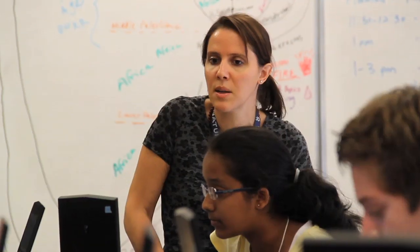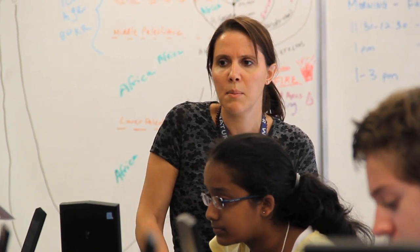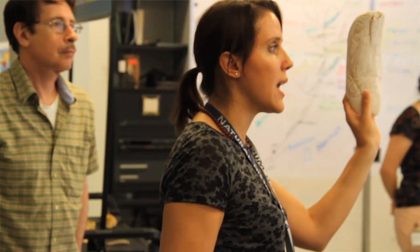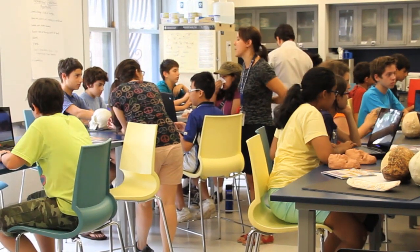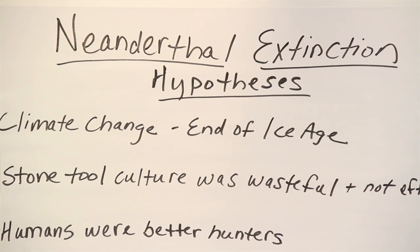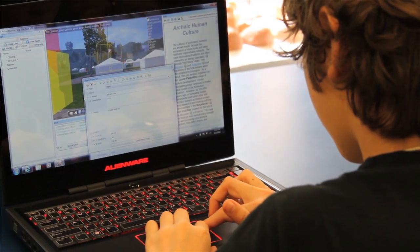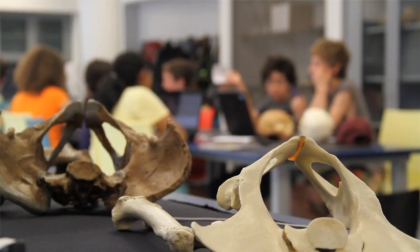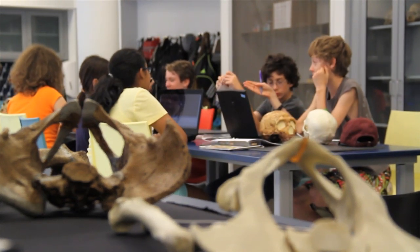My name is Samara Rubenstein. I'm the manager of the Sackler Educational Laboratory here in the Hall of Human Origins at the American Museum of Natural History. I have a PhD in physical anthropology, and I'm lucky enough to create curricula and develop courses for middle school and high school students who can learn about human evolution and ask themselves the questions that scientists are investigating today, using all of the evidence found in the hall and in the lab to answer these questions.